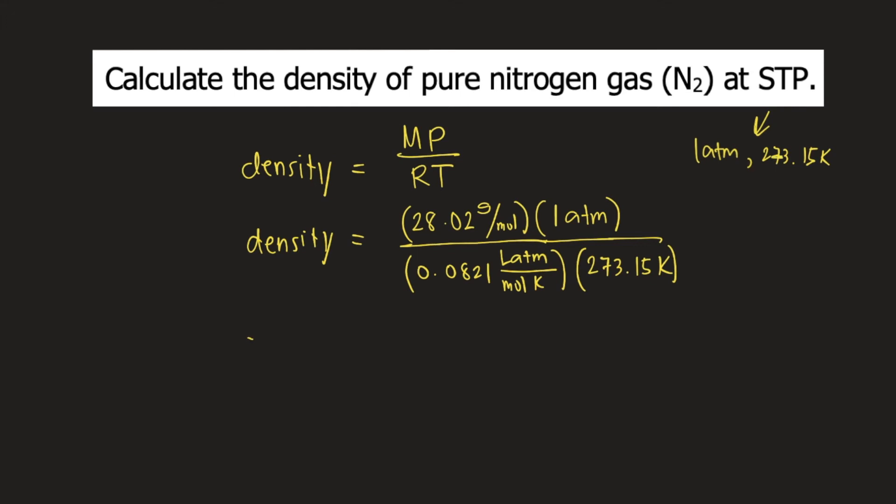So solving for density. This is equal to 1.25. And the units would be—moles will cancel, atm will cancel, Kelvin would cancel. The unit would be grams per liter.